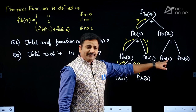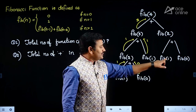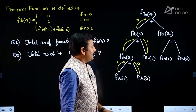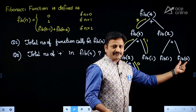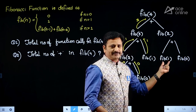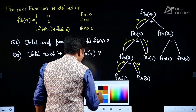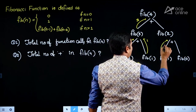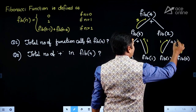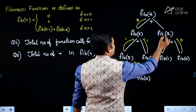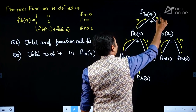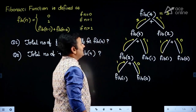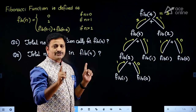We have two base conditions: n=0 is the first base condition, and n=1 is the second base condition. Since Fib(1) meets the second base condition, it returns 1; Fib(0) returns 0. So 1 + 0 = 1, and 2 + 1 = 3. Therefore, Fib(4) equals 3.